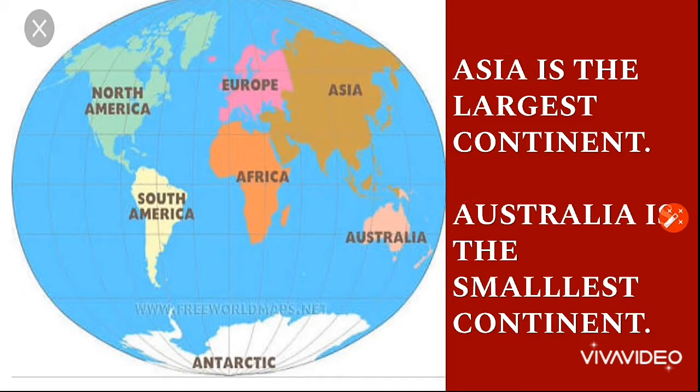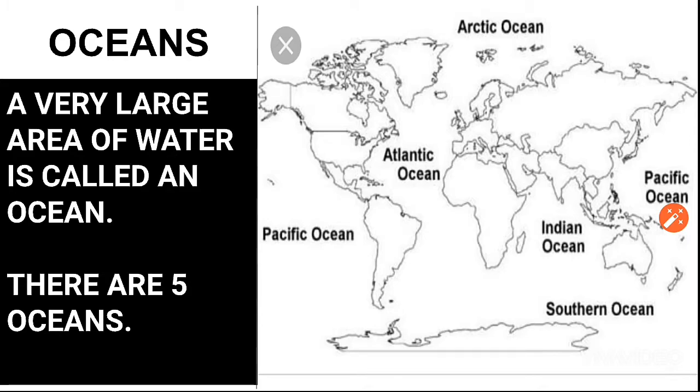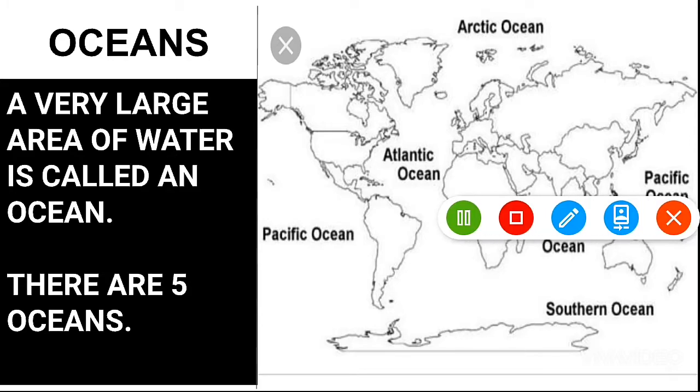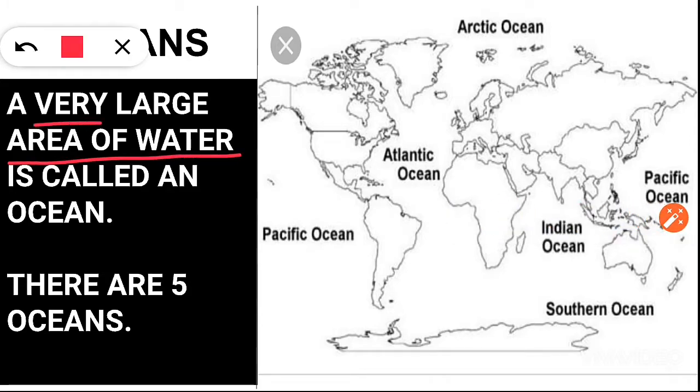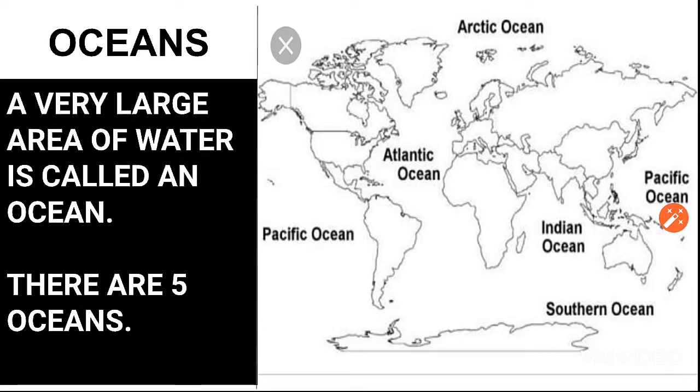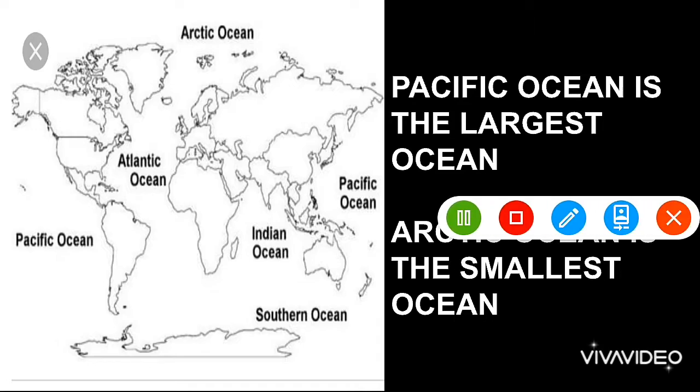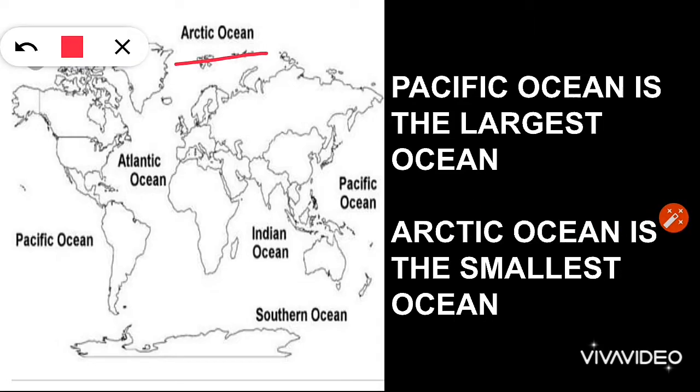Now, let us see about the oceans. Oceans are very large areas of water that are found on the earth. There are five main oceans. They are Arctic Ocean, Atlantic Ocean, Pacific Ocean, Indian Ocean and Southern Ocean.